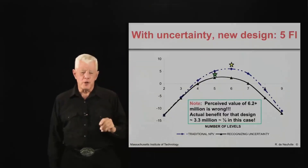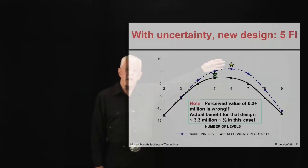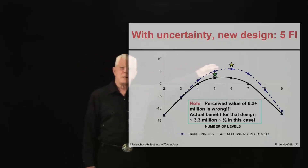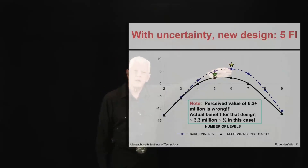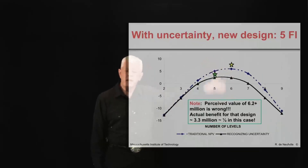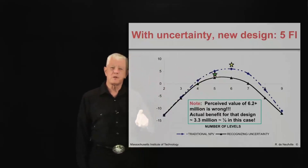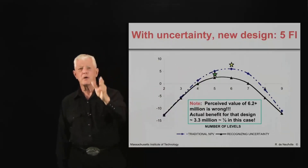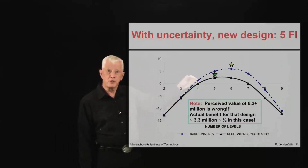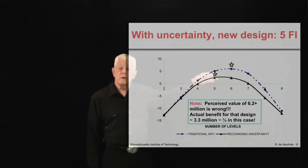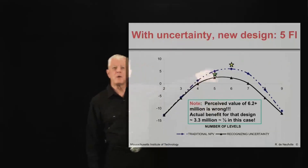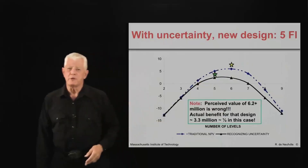What you should also note is that while the six-story design had a high return — about $6 million as its value — this is a fairy tale. Because the reality is we won't have a deterministic case; we'll have a variable case. There will be ups and downs in demand, and that leads to the actual performance of the system being constrained and systematically lower in value because of that nonlinearity and that constraint. Although we thought in a deterministic engineering case that the value was about $6 million, the actual value would be about $3 million — almost half — because the costs are basically fixed, so it's the revenues that determine the value.